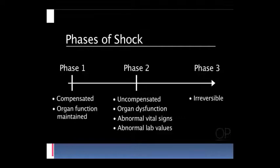Iske baad agar hum dekhein iske mechanism mein - stages of shock ya phases of shock - to teen phases mein shock chalta hai: initial non-progressive phase, second progressive decompensated phase, and third irreversible phase. First phase kaisi hai - compensated hoti hai, isme organ function maintained rehta hai. Phase second uncompensated hoti hai, isme organ dysfunction ho jata hai, vital signs abnormal ho jaate hain, lab values bhi abnormal aa jaati hain.